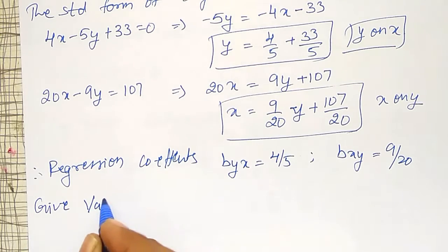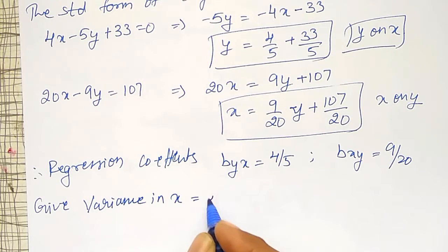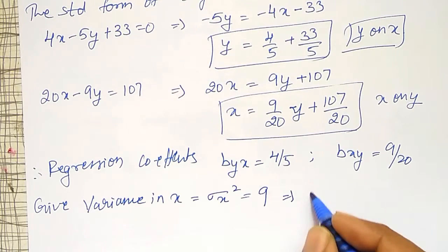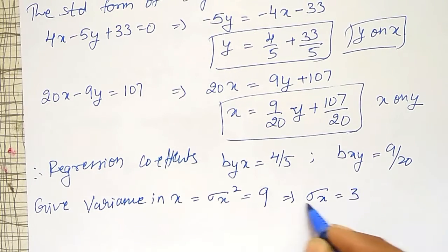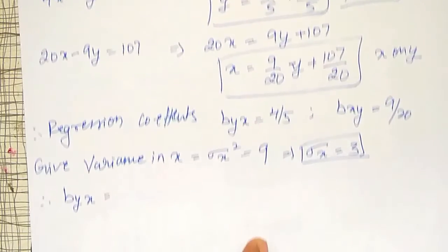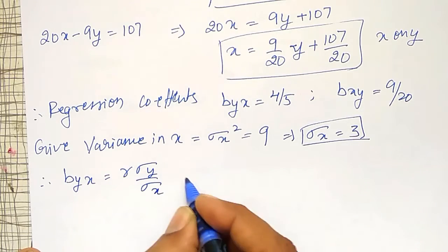Given variance in x, that is σx² = 9. That implies σx = 3. Therefore byx I can define it as r·σy/σx, which implies σy = byx·σx/r.